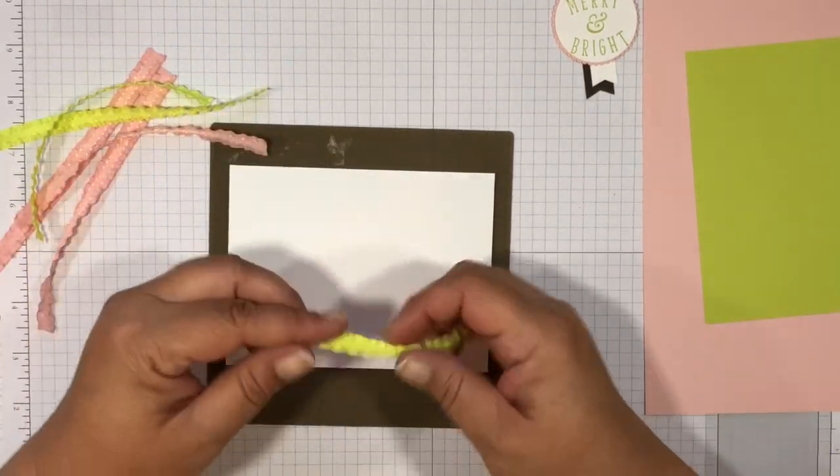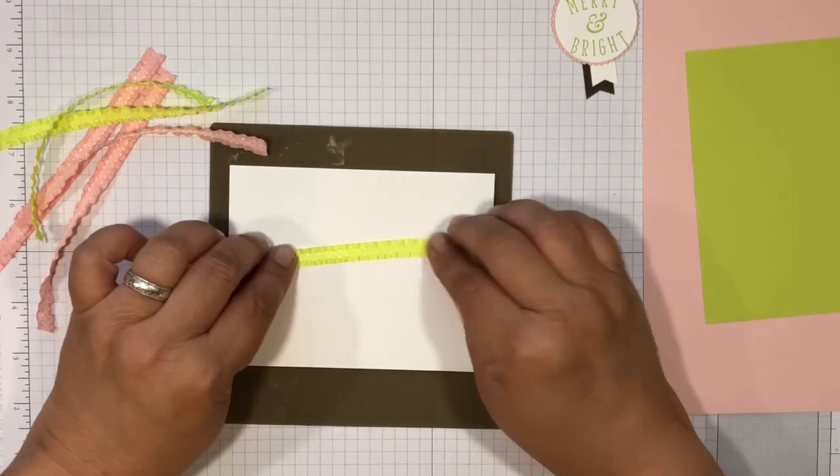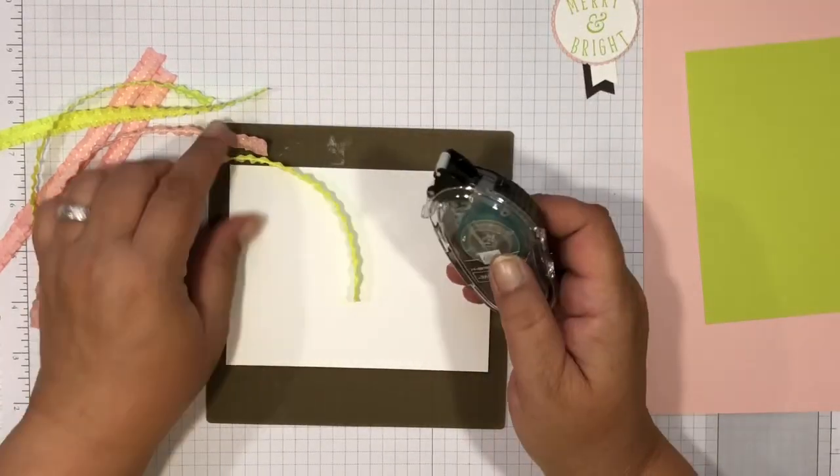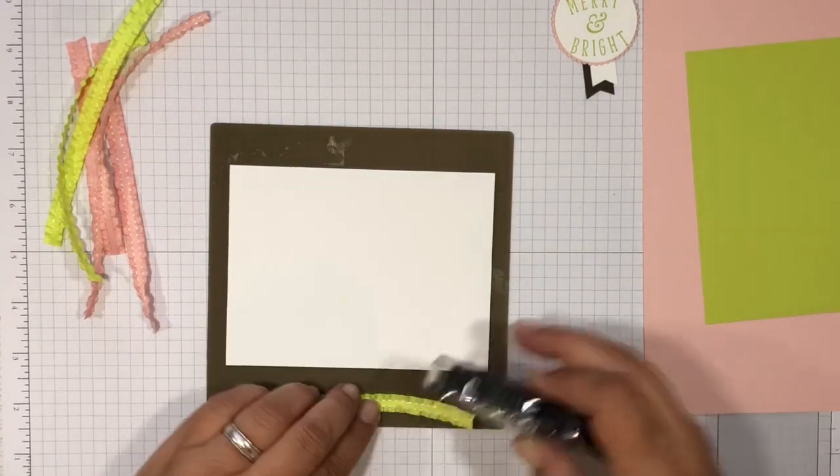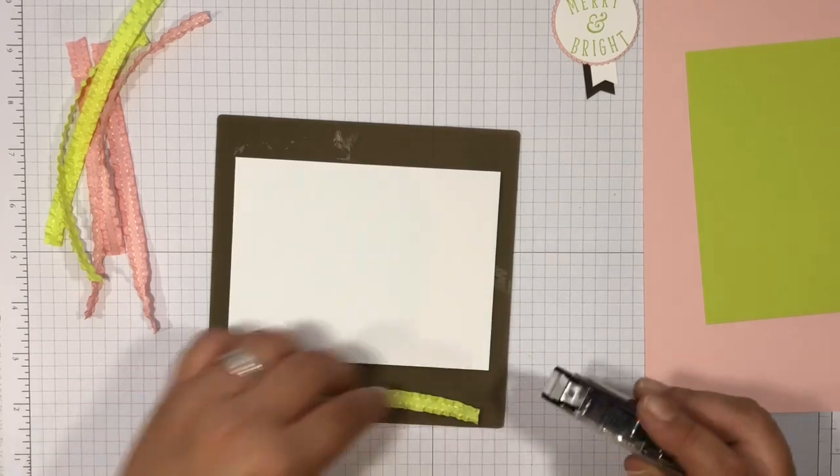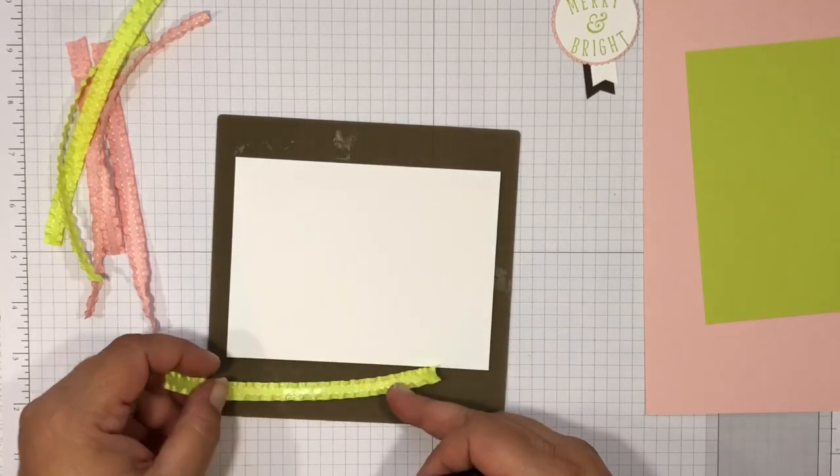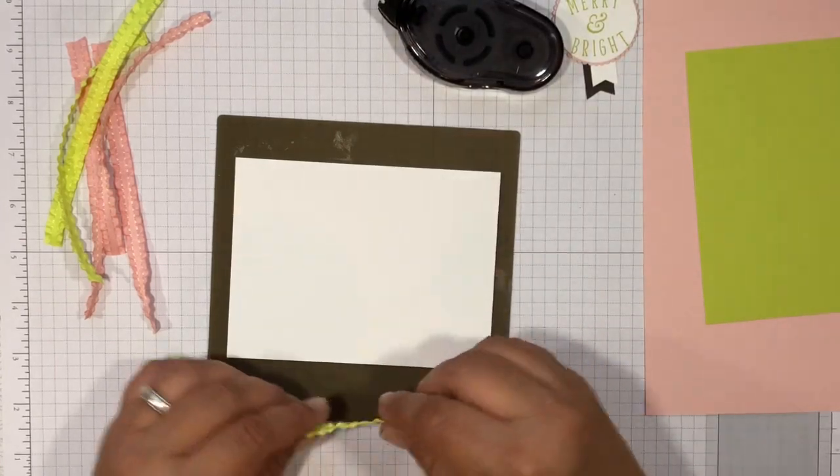I've already cut these strips down. You're going to need three of the lemon lime twist and three of the powder pink and these are just a little bit larger than the five and a quarter inch so we're going to come back and trim them off.